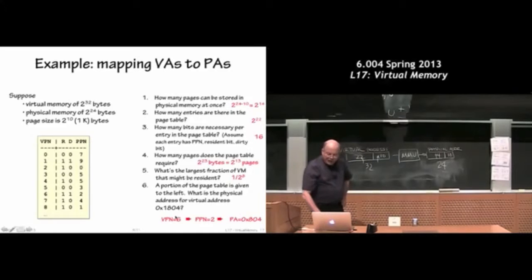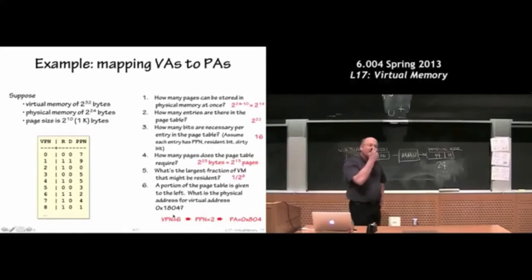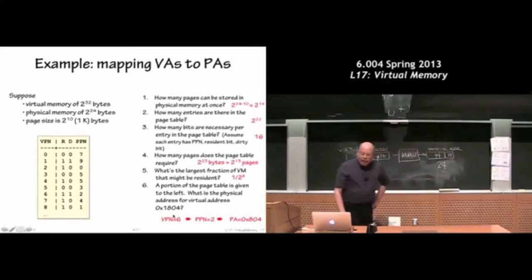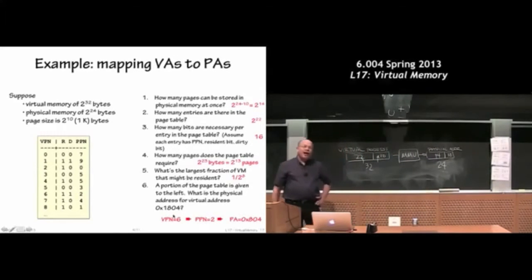How about this last one? 1804. I want address, virtual address 1804. I'm not going to work it through, but conceptually what do you have to do? If I want to actually figure out where in physical memory virtual address 1804 is, what is it I have to do?